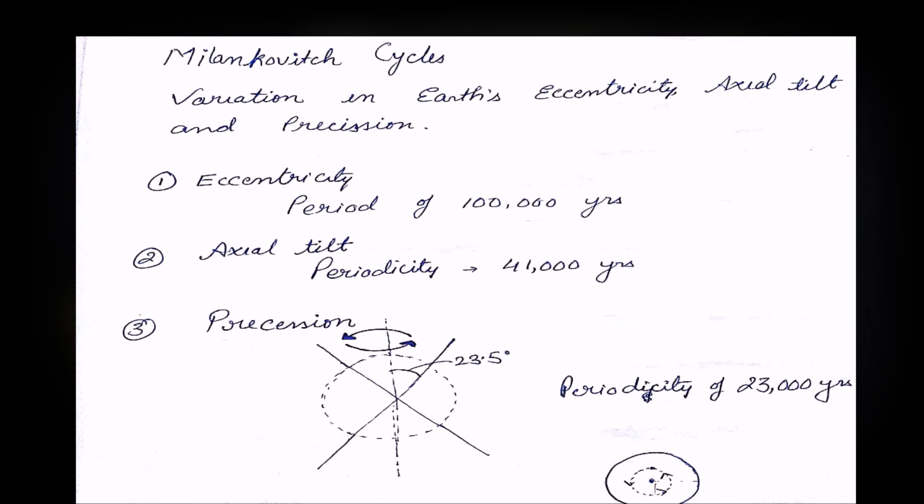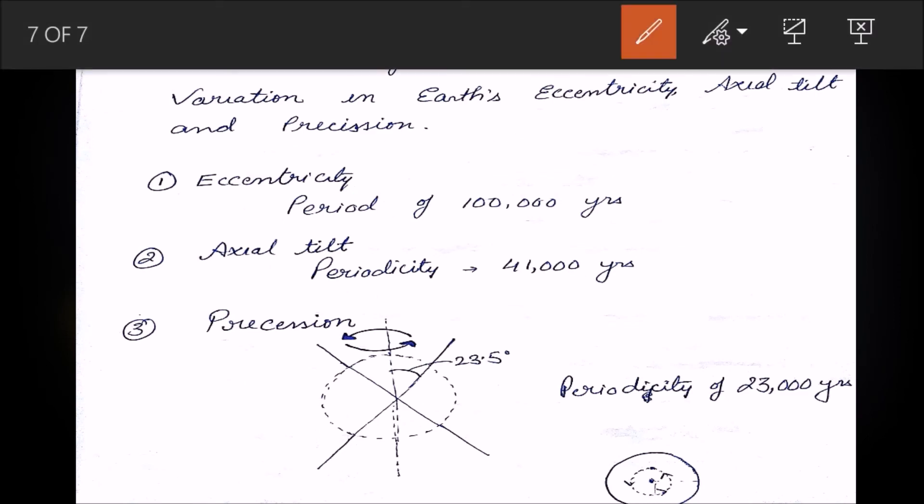Moving on, there is this term called Milanković cycles. Milanković cycles are the variation in Earth's eccentricity, axial tilt, and precession. The eccentricity period is about 100,000 years. Eccentricity, as we discussed, is square root of 1 minus (b²/a²). This value fluctuates between two numbers, and the period it takes is about 100,000 years.